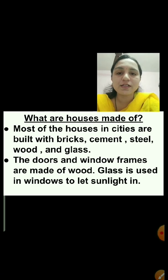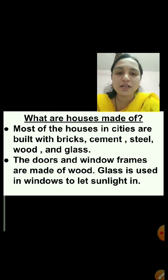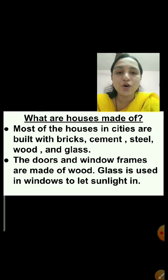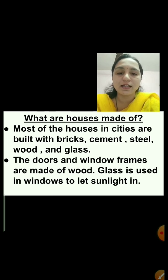Now we will see what houses are made of — which materials are used in building houses. Most houses in the cities are built with rocks, bricks, cement, steel, wood, and glass. The doors and window frames are made of wood. Glass is used in windows to let sunlight in.